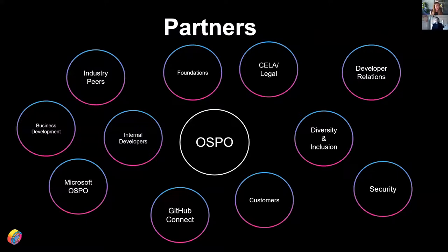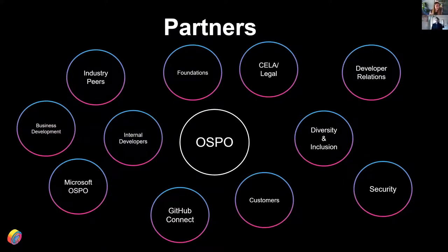Our OSPO really relies on internal and external partners to be successful in setting up policies and processes around open source at GitHub. We're great at creating simple processes for engineers to help them with open source. As developers, when you want to do something with open source, you don't want a heavyweight process — you want something lightweight and efficient. Open source is in our DNA here. But when we want to collaborate outside of the organization, it gets challenging.